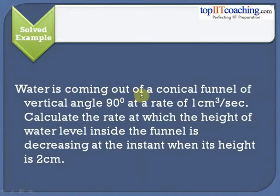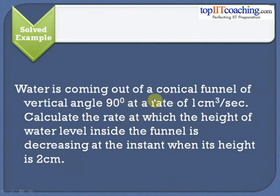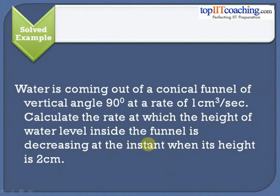Water is coming out of a conical funnel of vertical angle 90 degrees at a rate of 1 centimeter cube per second. Calculate the rate at which the height of the water level inside the funnel is decreasing at the instant when its height is equal to 2 centimeters. There is a conical funnel of vertical angle 90 degrees, water is coming out at the rate of 1 centimeter cube per second, and as the water is coming out, its height would be decreasing.